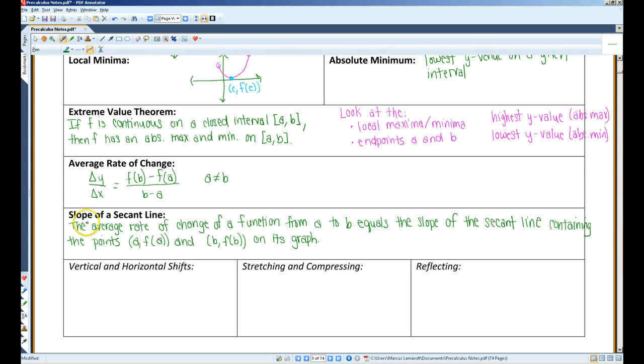That's because the average rate of change of a function is essentially the slope of the secant line containing these two points. If you guys remember from geometry, a secant line intersects a graph twice. Actually, that's exactly what this theorem says. The average rate of change of a function from a to b equals the slope of the secant line containing the points (a, f of a) and (b, f of b) on its graph.